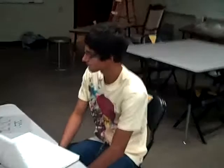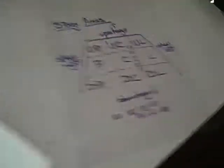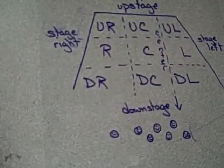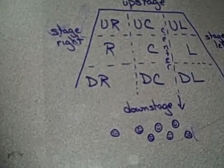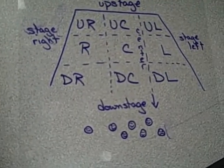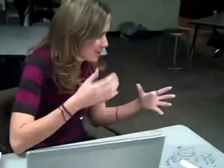Downstage is closest to the audience, and upstage is furthest away from the audience. Because in the olden days, like in Greek theater, they had their stage initially tilted so that the audience could see all of the performers. But because people started slipping down the stage, they figured out that that wasn't the best idea. So that's why close to the audience is downstage, furthest away is upstage.